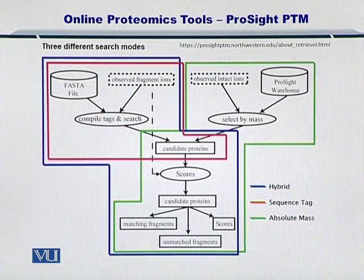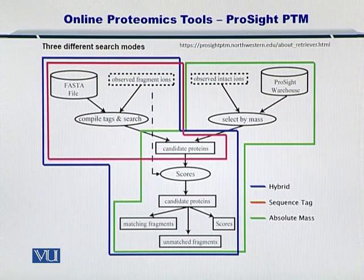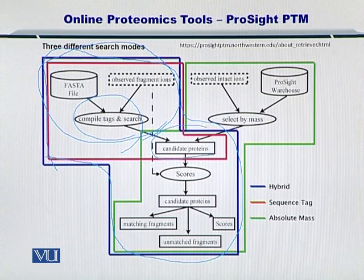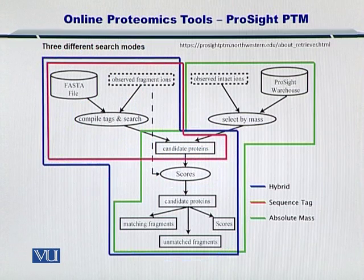The overview of ProSight PTM as given on their website is shown here in the figure. There are three different search modes. The first is the hybrid search mode, shown here in blue, which includes using the mass spectrometry data to compile sequence tags, followed by shortlisting of candidate proteins and scoring. So in this mode, first you obtain the data, then you get the peptide sequence tags, then you score them, and therefore you identify the protein.